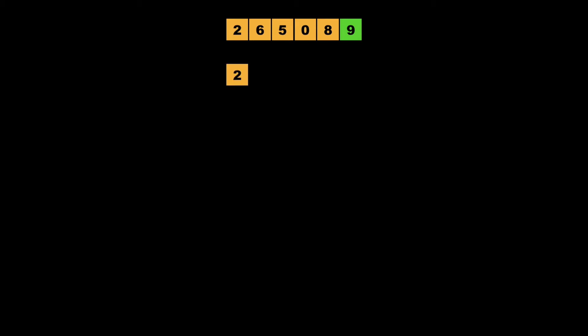Let's consider an example of an unsorted array and consider the first version of quicksort where we choose the first element as pivot. So 9 is the pivot, and then we insert 9 at its correct location and our array is partitioned into left and right partitions. Since there are no elements to the right side of 9, we get only a left partition whose contents are 2, 6, 5, 0, 8.